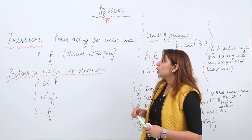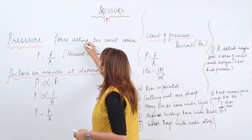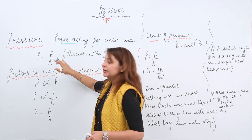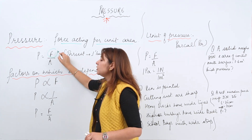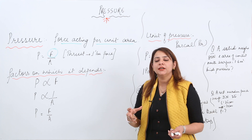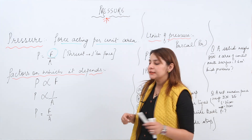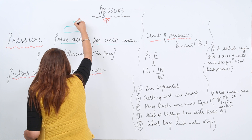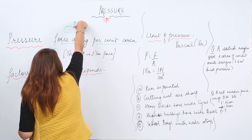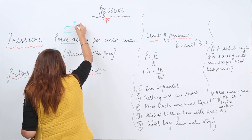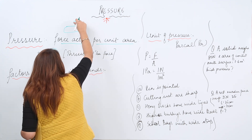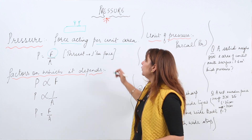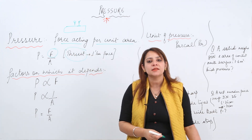Pressure is the force acting per unit area, so P is equal to F upon A. But the force here is a special kind of force. For example, if this is a table and I try to put a nail into it, I press the nail from the side, applying a perpendicular force on the surface. The force that acts normal to the surface is given a special name: thrust.